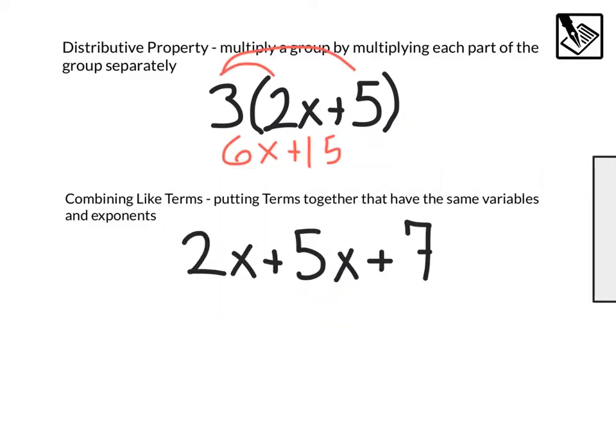Also want to talk about combining like terms. This means putting terms together that have the same variable and exponents. For example, down here we have 2x plus 5x with the same variable, but then this plus 7 with no x variable. So we can combine the 2x and the 5x. 2x plus 5x would give me 7x's total. And then we have that plus 7 remaining. Another useful tool when solving equations.